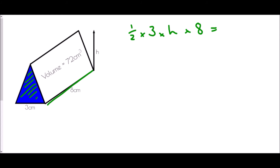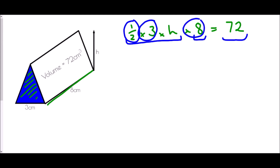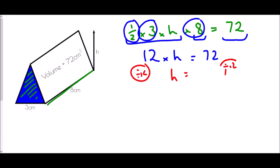And we've been told that the volume is 72. So this first section is the area of the cross section, this is the length, and this is the volume. All I want to do is solve this equation to get h on its own. So first: a half times three times eight — that is three times eight is 24, times a half is 12. So 12 times the height equals 72. How do I get the height on its own? Well, I'm going to have to divide by 12. Dividing by 12 on both sides: 72 divided by 12 is six. So the height is six centimetres.